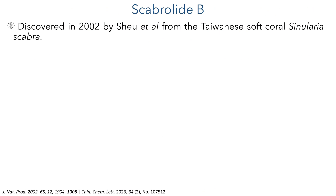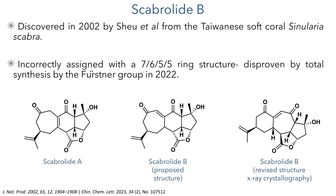Scabralide B was first discovered in 2002 by Xu et al. from the Taiwanese soft coral Sinularia scabra. We have actually discussed this molecule before on this channel, back in 2022, when the Fürstner Group published their synthesis of Scabralide A and the proposed structure of Scabralide B. That synthesis proved that the putative 7-6-5-5 ring structure was incorrect and needed to be revised.